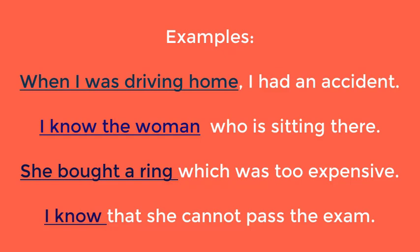More examples of dependent clauses: 'I know the woman who is sitting there.' The clause 'who is sitting there' is dependent. 'She bought a ring, which was too expensive.' The clause 'which was too expensive' is dependent. 'I know that she cannot pass the exam.' Here, 'that she cannot pass the exam' is the dependent clause.